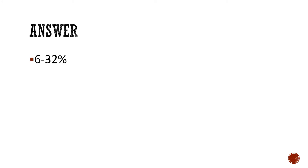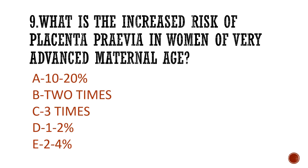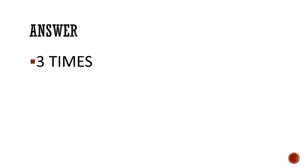Question 9: What is the increased risk of placenta previa in women of very advanced maternal age? Is it A) 10–20%, B) 2x increased risk, C) 3x the risk, D) 1–2%, or E) 2–4%? The answer is 3x the risk.